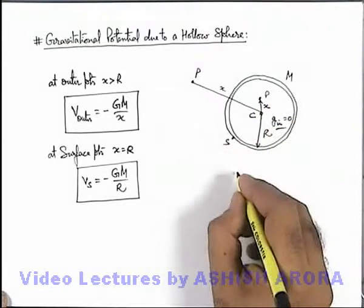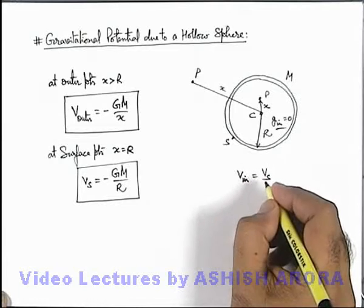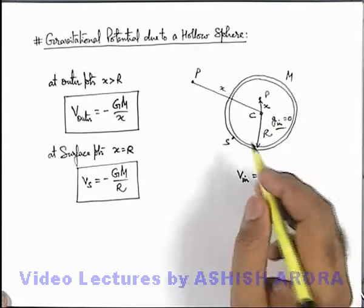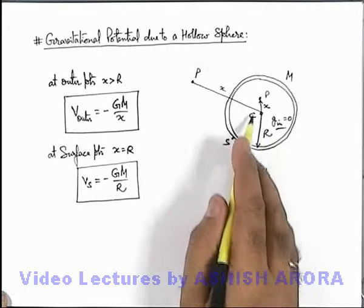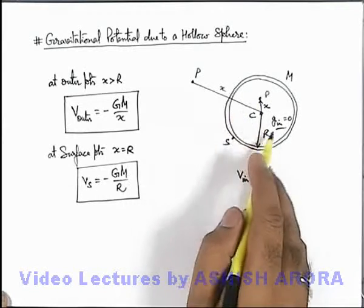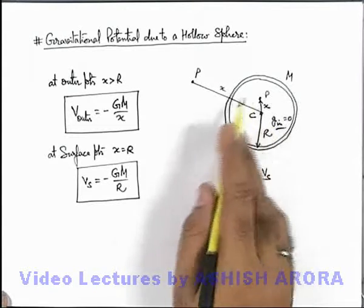So we can say potential at any interior point must be equal to potential at surface, or potential difference of any interior point with that of surface is always zero because no gravitational field exists so no work is done in displacement of a body within the interior region of a shell.